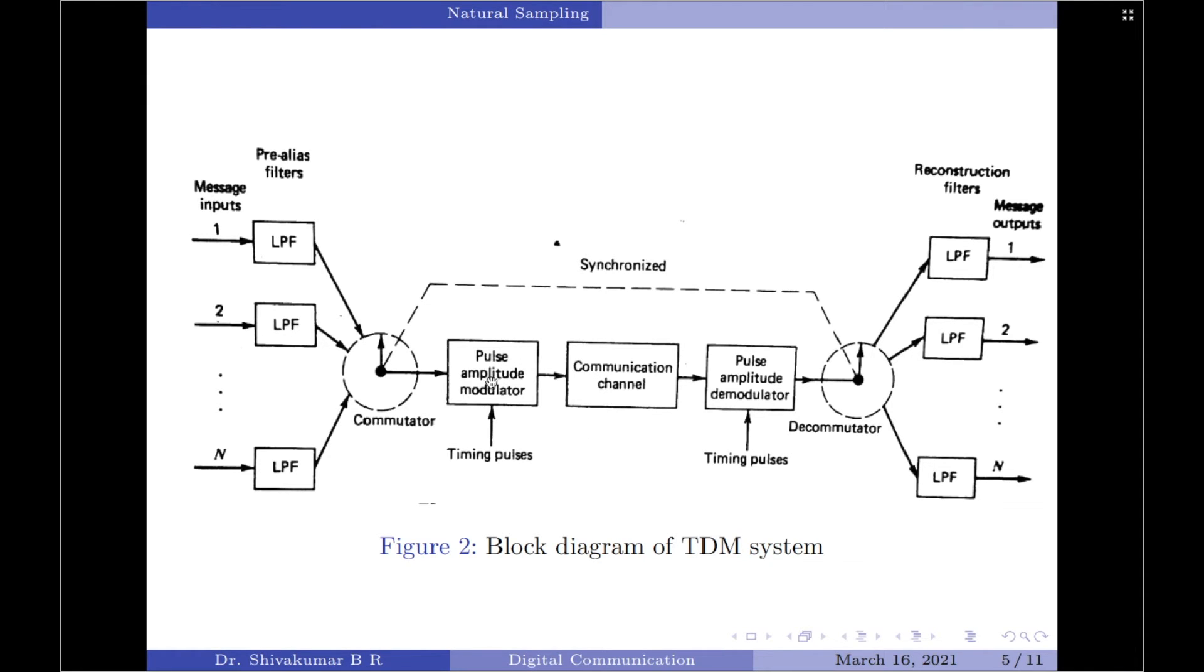The pulse amplitude modulated version of the TDM signal is then passed through the communication channel and the output of the channel acts as the input to the receiver. At the receiver end of the system, the received signal is applied to a pulse amplitude demodulator, which performs the reverse operation of the pulse amplitude modulator. The pulses produced at the pulse demodulator output are then distributed to the appropriate low-pass reconstruction filters by means of a decommutator.